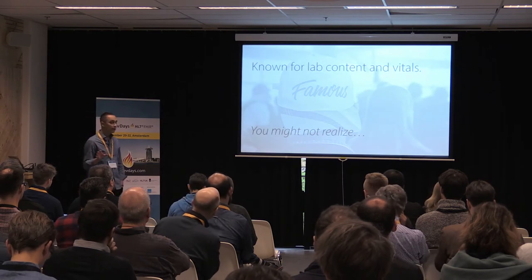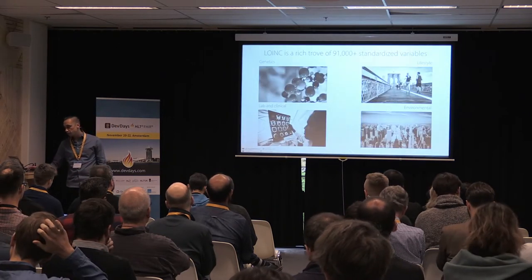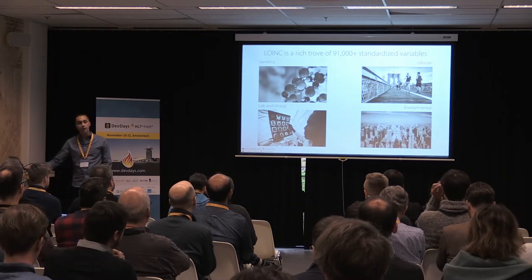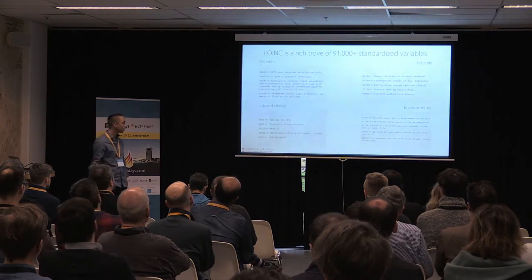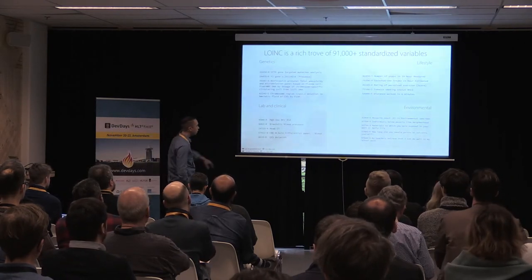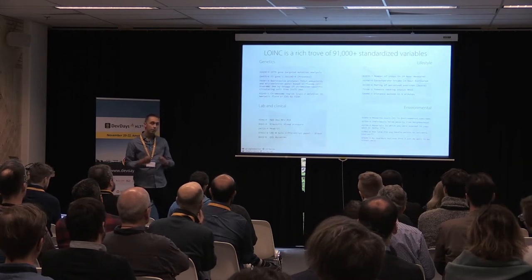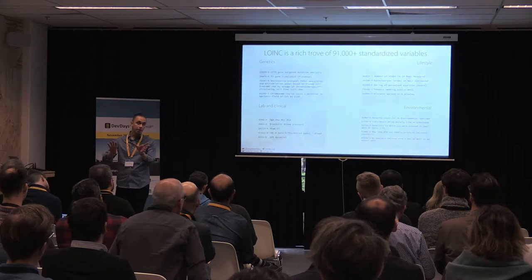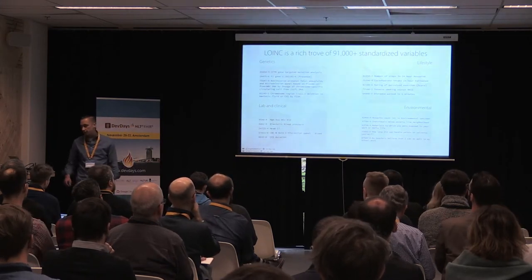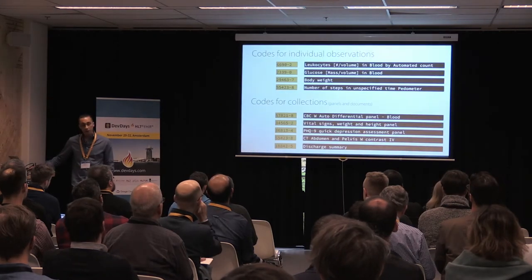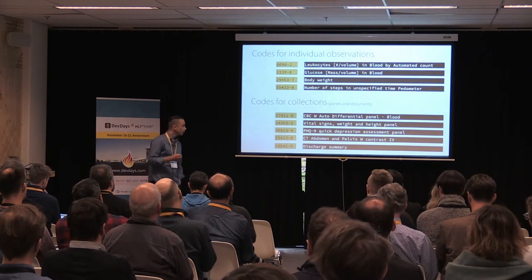Many of you might know LOINC from the context of being a coding system widely used in laboratory tests or vitals, but you might not realize there's a wide spectrum of variables ranging all the way from clinical genetic reporting up through measurements typically found in electronic health records — laboratory tests, vital signs, radiology procedures, clinical documents, activity measures, or even cases where the unit of analysis is a community, such as a census block or other geographic areas. LOINC has codes for those things as well. We create codes that represent individual observations and individual tests, as well as codes that represent collections of those individual observations.